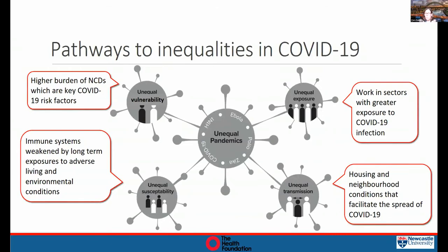Building on the syndemic pandemic concept, we've identified four pathways through which deprivation and COVID-19 outcomes interact. The first is unequal exposure: people working in sectors with greater exposure — particularly during early pandemic waves when control measures were in place — had higher risk of infection and therefore higher mortality, reflected in the occupational inequalities we saw. The second pathway is unequal transmission: once infection spreads in a community, higher population density and overcrowded housing with less ability to self-isolate are more prevalent among more deprived groups.